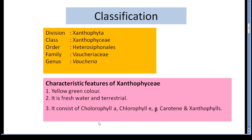Now we will see the general characters of Xanthophyceae. The members of this class are yellow-green in color, therefore it is called yellow-green alga. A majority of yellow-green algae are fresh water, but some are terrestrial, growing on tree trunks, on damp walls or soil. A few species are marine, for example Halospira. The Xanthophyceae cell has a definite cell wall chiefly composed of pectic substances, either pectose or pectic acid.